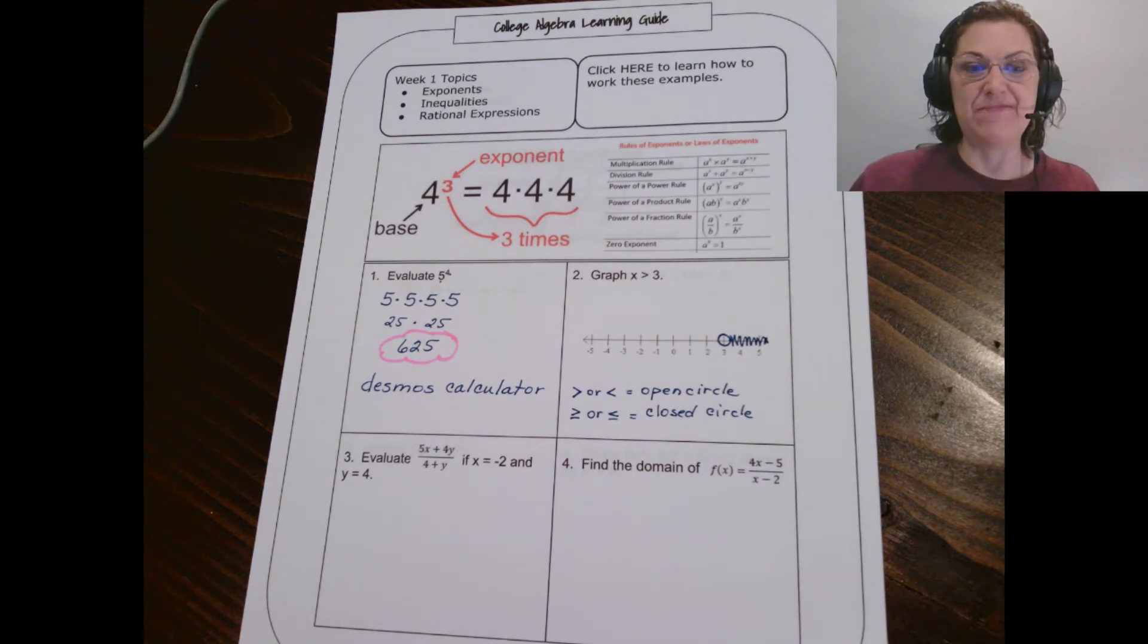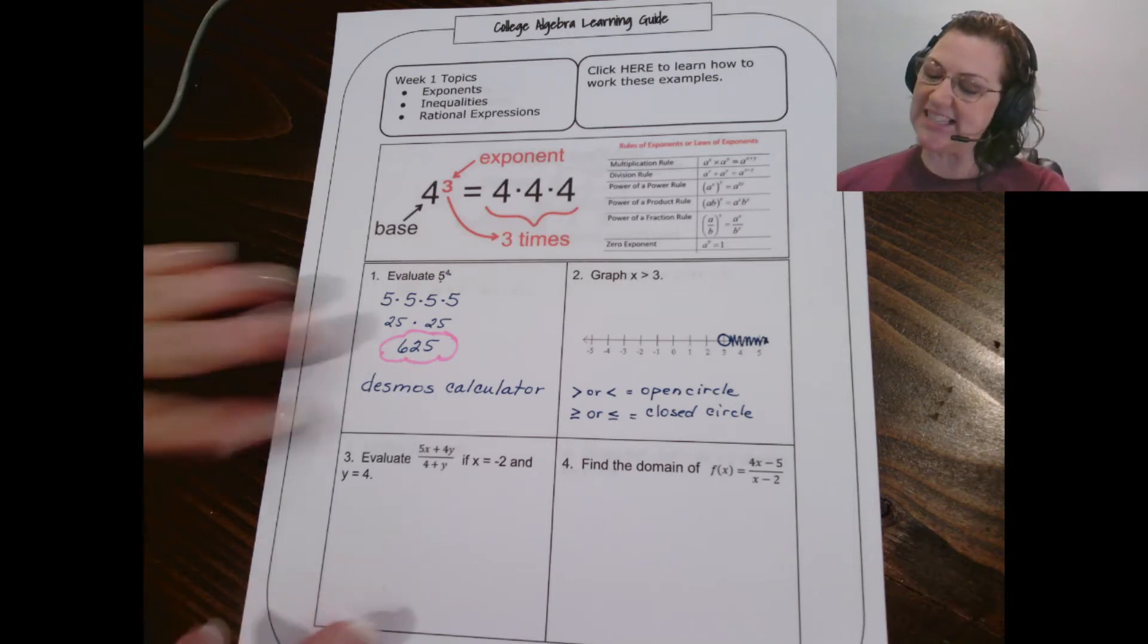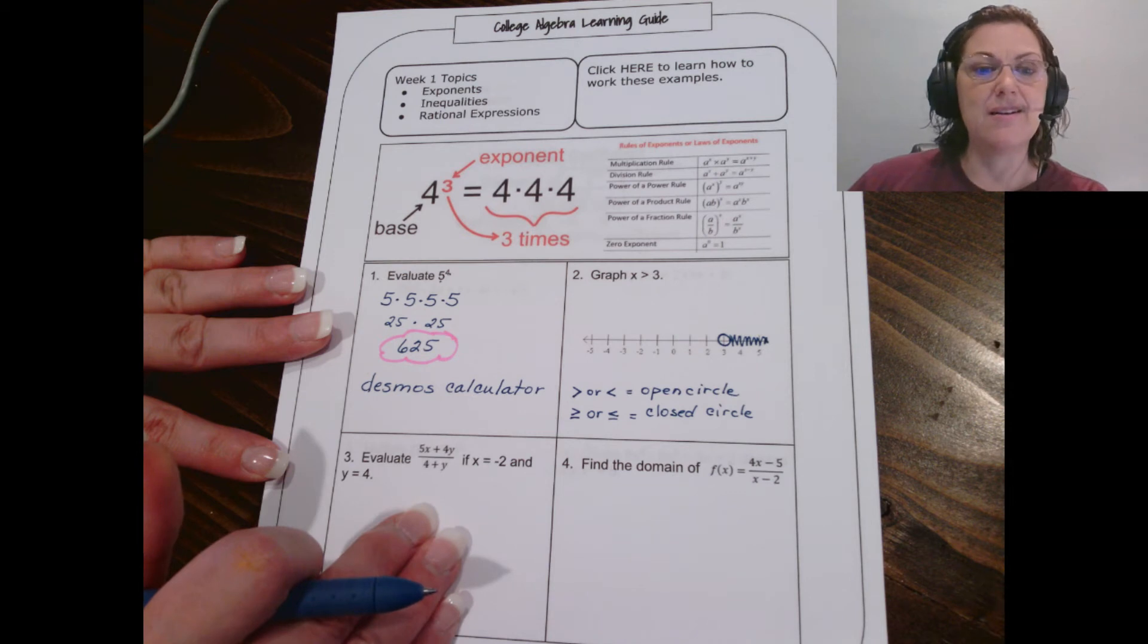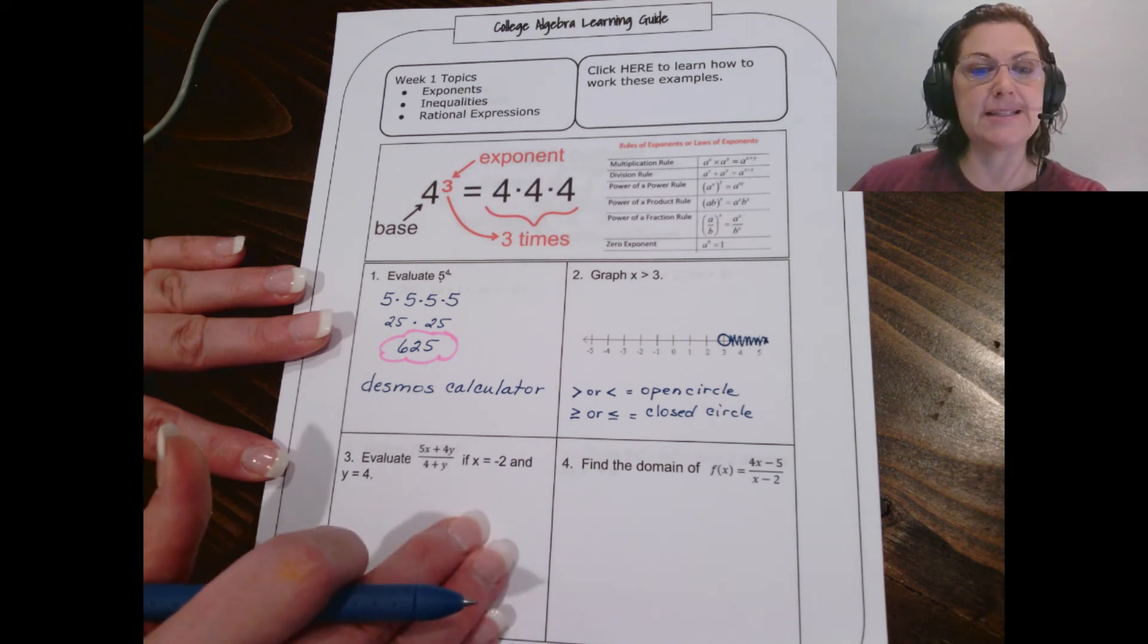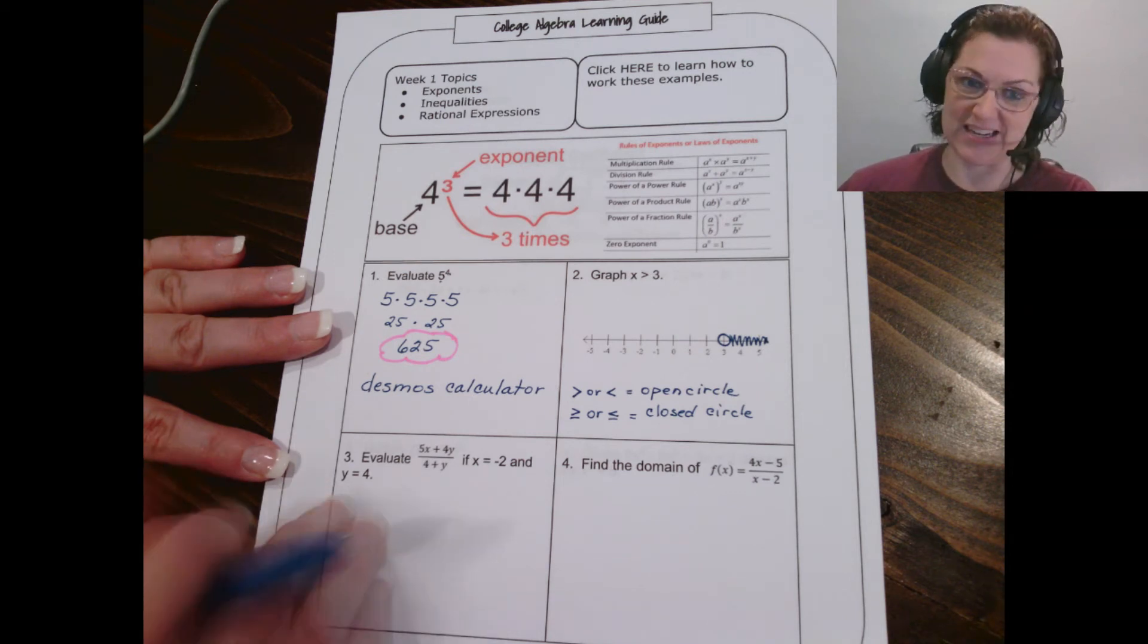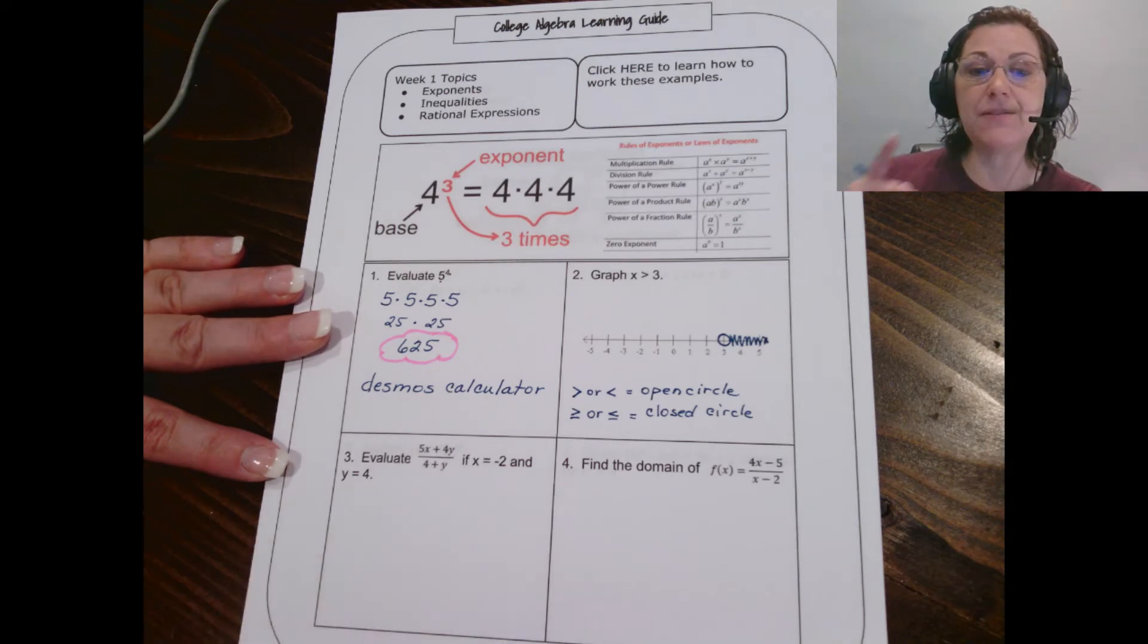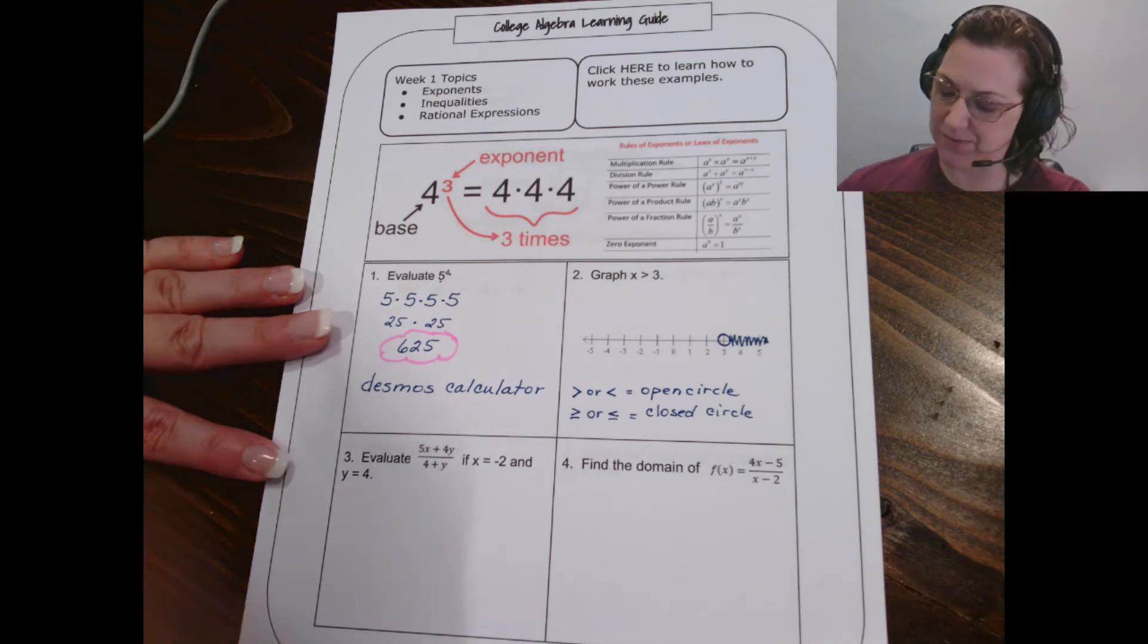Okay, let's take a look then at number three. Number three is asking us to evaluate this expression if we know that x is negative 2 and y is 4. That just simply means we're going to replace negative 2, we're going to replace an x with negative 2, and we're going to replace the y with 4.